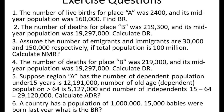The young dependent population under 15 years is 12,191,000. The elderly dependent population greater than 64 years is 5,127,000. The independent working-age population aged 15 to 64 is 29,120,000. Calculate the age dependency ratio.